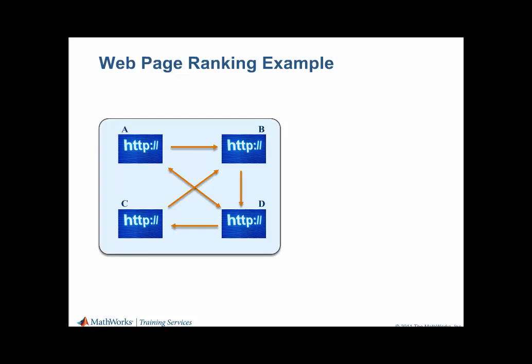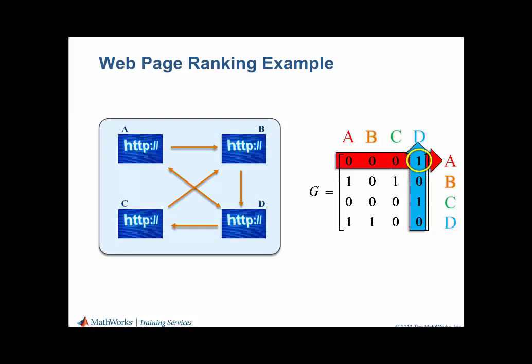Let's create the connectivity matrix G from this information. G will map the current distribution of users per web page into a new distribution after each user clicks once and moves to another page. In G, the rows indicate the links to a page, and the columns represent the links from a page. For example, the first row indicates that there is one link to A, and that link is from page D. Thus, if a user is currently on page D, one click will undoubtedly bring them to page A.